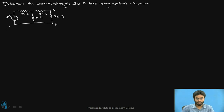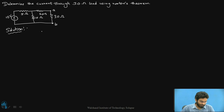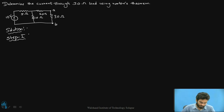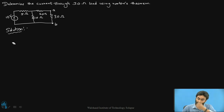Similar to Thevenin's theorem, we are going to solve this in three steps. The first step is the calculation of Isc, then in step two we are going to calculate the value of Rn, and then in step three we are going to draw the final Norton's equivalent circuit. Let me make a simple template which will ease us in proceeding towards the solution of the problem.